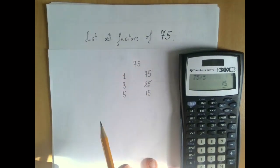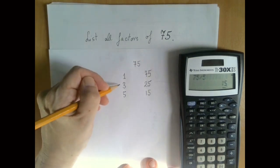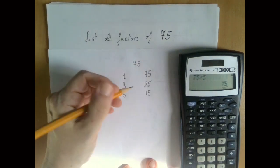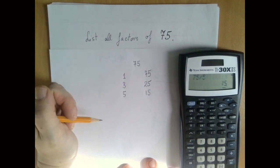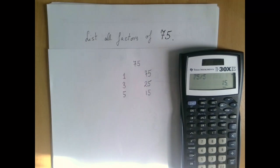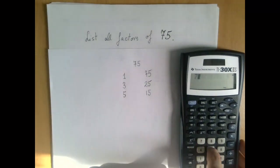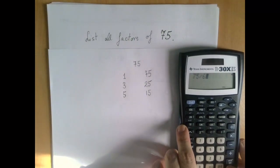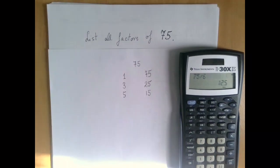Notice we always find these factors in pairs, and as the first one in the pair increases, the second one decreases—it's a balancing act. So we could roll up from 5 to 6. 6 will not work because 2 didn't work. We cannot find a number divisible by 6 that's not divisible by 2.